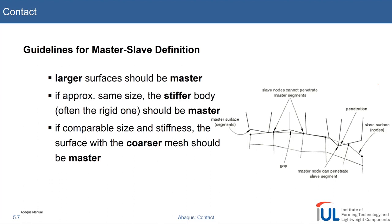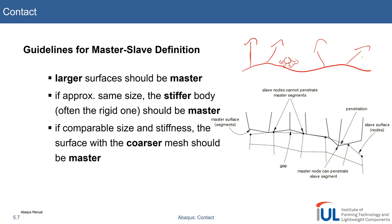Generally, larger surfaces should be the master. So if you have two deformable bodies where one is large and the other is very tiny, it makes sense that the geometrically larger surface is the master, assuming the bodies are made of the same material with the same element density. The larger surface should be the master because it is numerically more efficient — the algorithm looks from the slave to find the master, so having the entire larger body as slave would be computationally less efficient.